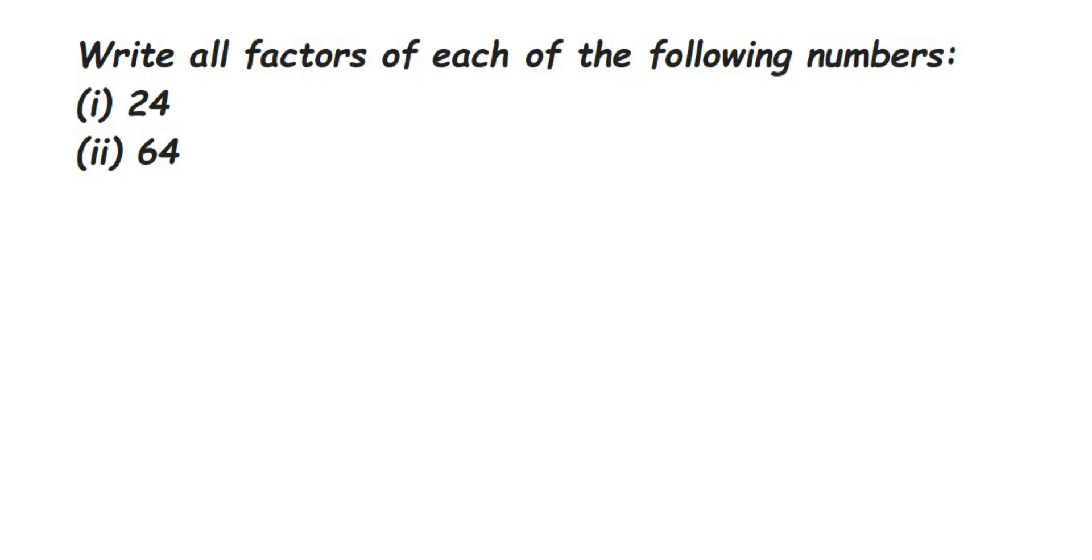Hey everyone, here's a question on factors. The question is: write all factors of each of the following numbers. So what do you mean by factors? Factors is nothing but by which number this number 24 is divisible. Or, the numbers which can completely divide 24 are called factors. In other words, in which all tables 24 goes.